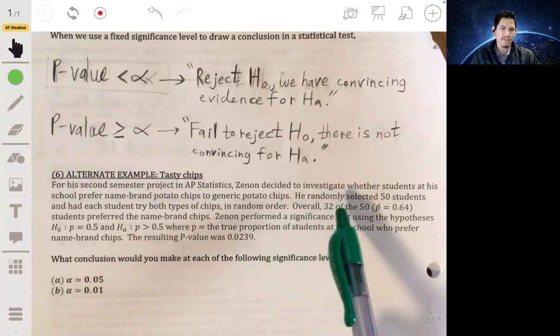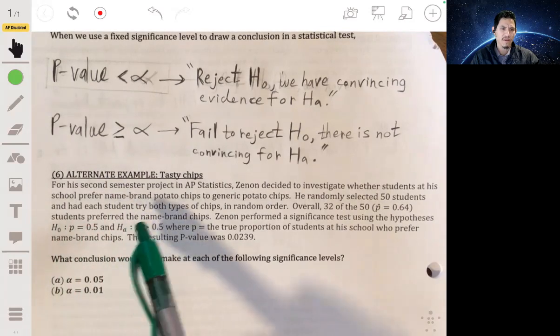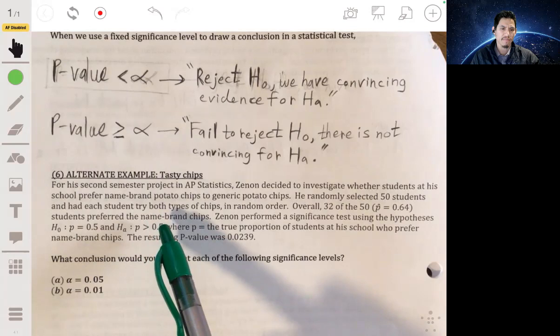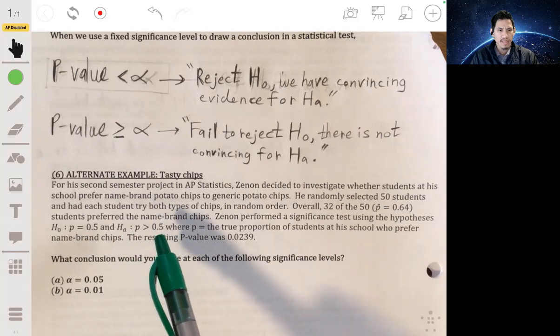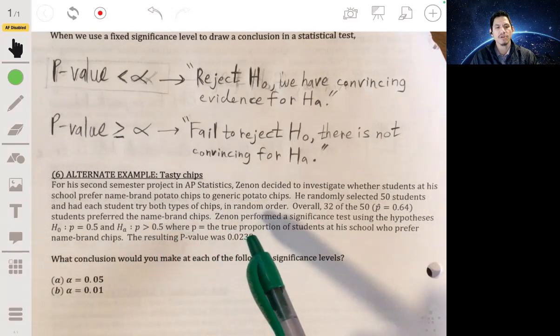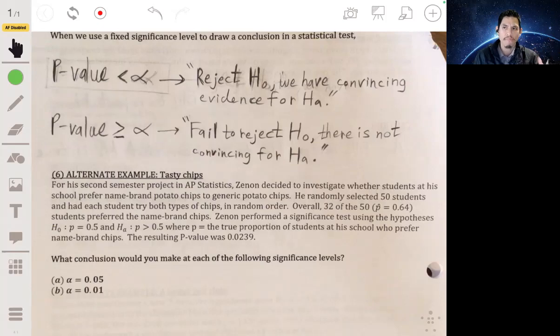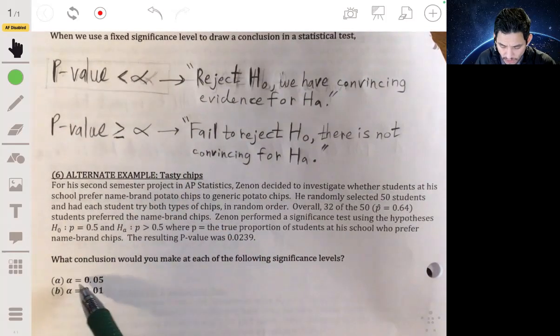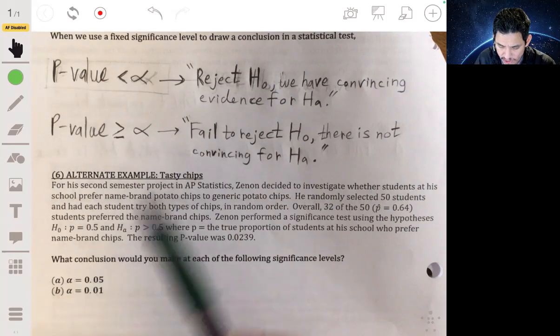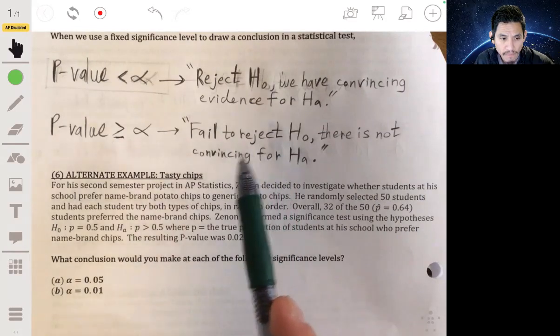And then Zenon performs a significance test using the hypotheses where H₀ is that P is 0.5 versus the alternative that P is more than 0.5. And remember, P is going to be the true proportion of students who prefer name brand potato chips. He gets a p-value of 0.0239. And so what do we say at these two alpha levels? What would the conclusion be at these two alpha levels? And focus more on the context. Remember, here I have it right here. If our p-value is less than our alpha, we reject H₀. If it's more than or equal to our alpha, we fail to reject H₀.